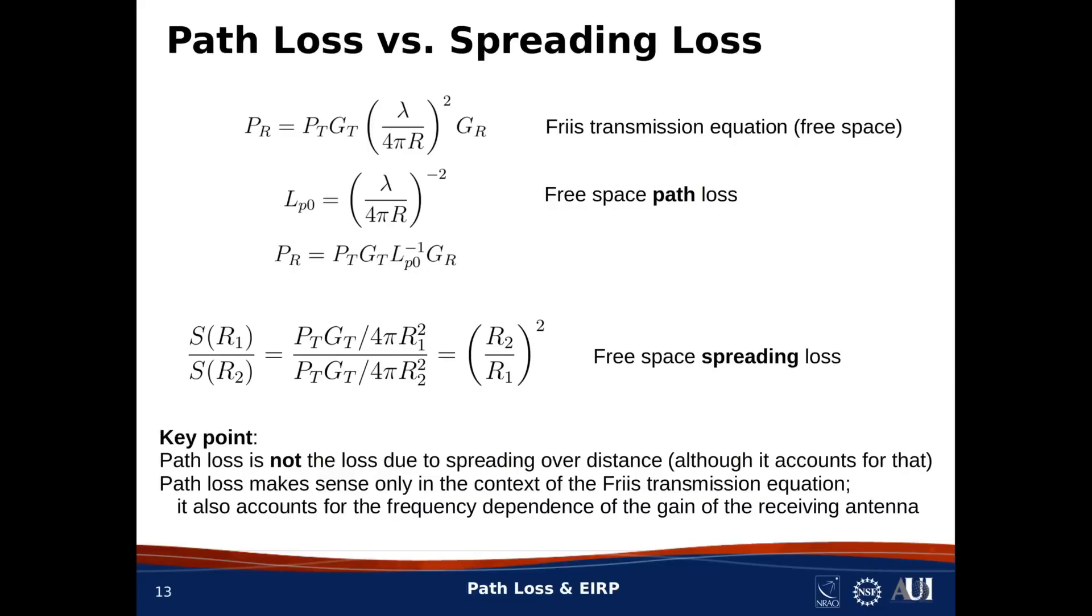So here's that point again. Path loss is not the loss due to spreading over distance, although it certainly accounts for that. Think of it this way. Path loss makes sense only in the context of the Friis transmission equation, and specifically, it accounts for the frequency dependence of the gain of the receiving antenna. Not the gain of the receiving antenna per se, but only the frequency dependence of that gain.